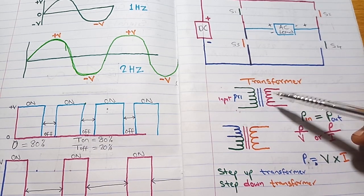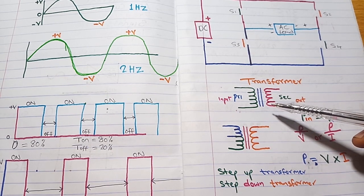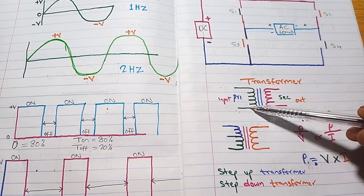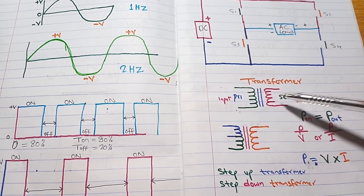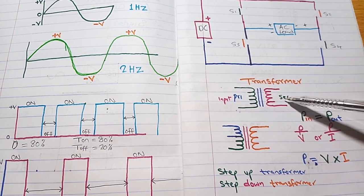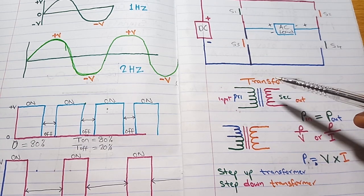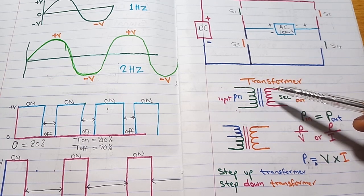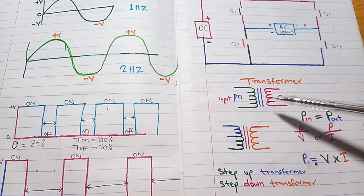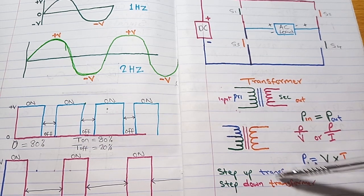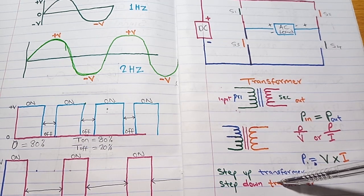In a transformer, we have what we call the primary and the secondary — the primary being the input and the secondary being the output. We have two types of transformers: the step-up transformer and the step-down transformer.